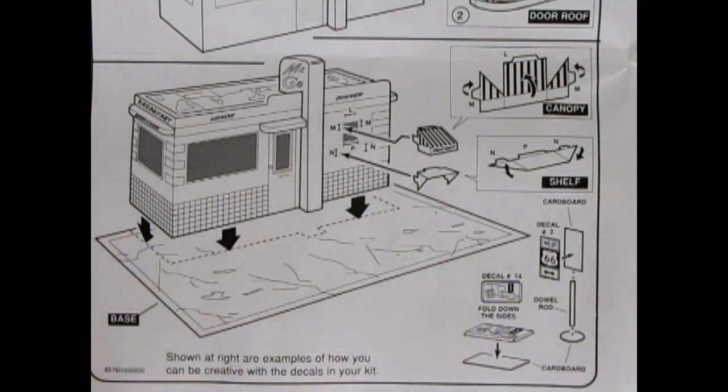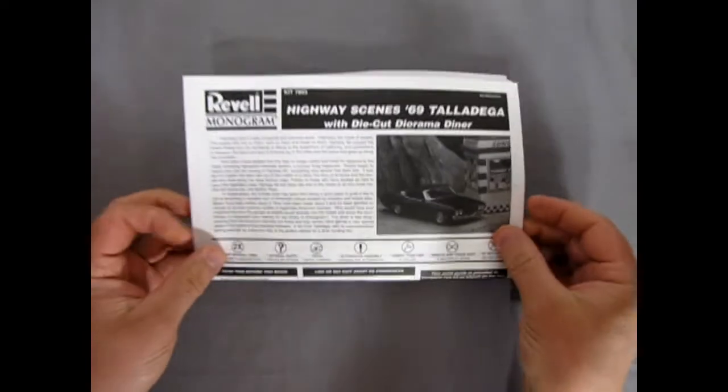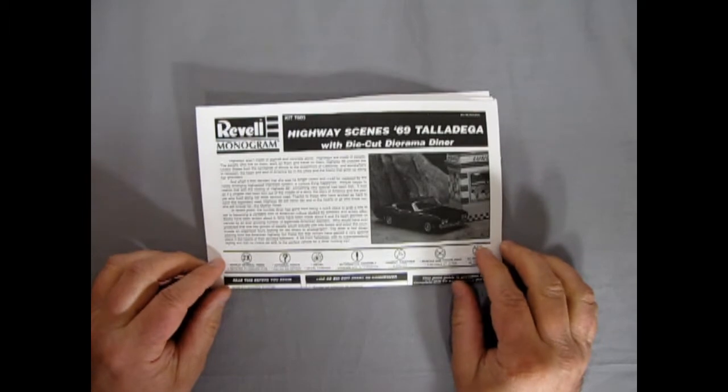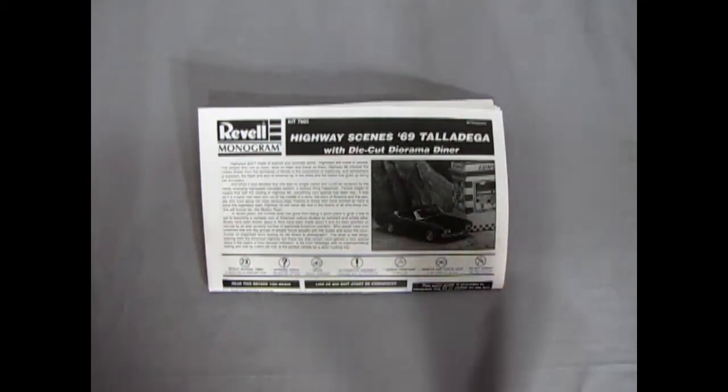And that completes our look at our Revell Monogram highway scene 69 Ford Talladega with die cut diorama diner instructions. Now I don't know about you but I'm pretty hungry to see some of those white parts.